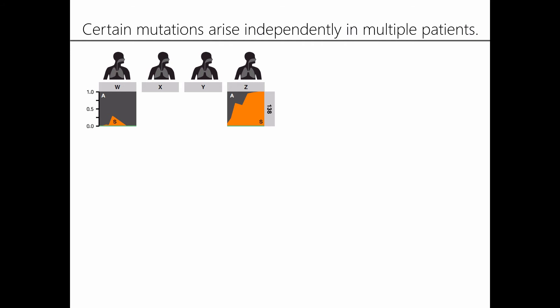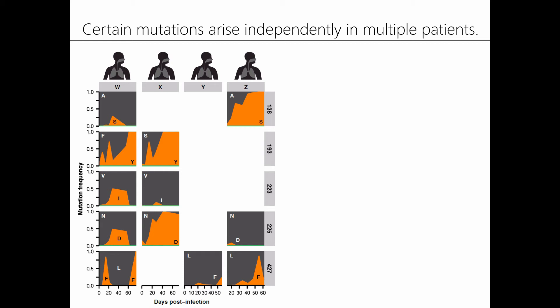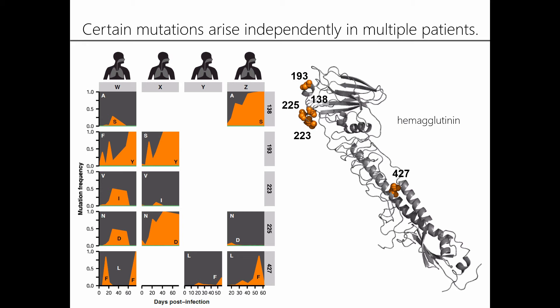We wanted to understand what was driving these evolutionary dynamics. One clue came from comparing the evolutionary trajectories in different patients. To our surprise, we saw that sometimes the exact same mutation would arise independently in multiple patients — and we know these patients did not infect each other. Here I'm showing you the A138S mutation, which arises in two of the four patients in our study. Looking more broadly across the hemagglutinin gene, we see various sites of recurrent mutation in multiple patients. This indicates selection favoring the increase in frequency of these particular mutations. When we plot the sites of mutation on the crystal structure of hemagglutinin, four of these recurrent sites cluster in the globular head domain — the main target of immune selection — leading us to hypothesize that these mutations help the virus escape from the patient's immune responses.